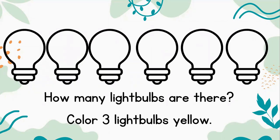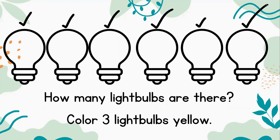How many light bulbs are there? Color three light bulbs yellow. Okay students, are you ready to count with me? Here we go: one, two, three, four, five, six. There are a total of six light bulbs.